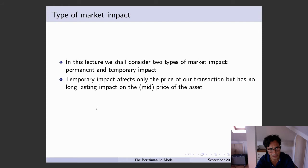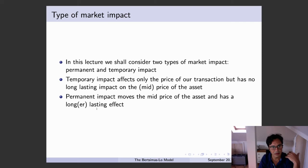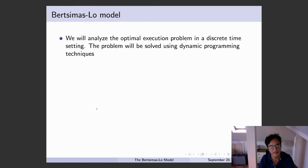So as I was mentioning, temporary impact affects only the price of our transaction, but not a long lasting effect, whereas permanent impact is going to have an effect on the market and is going to stay there forever. Nothing is forever, but we'll see in what sense.